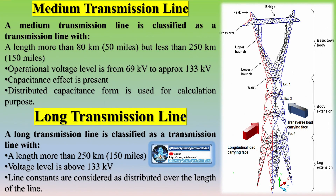A short transmission line is classified as a transmission line with a length less than 80 kilometers or 50 miles, with a voltage level less than 69 kV. The capacitance effect is negligible, so only resistance and inductance are taken into calculation; capacitance is neglected.